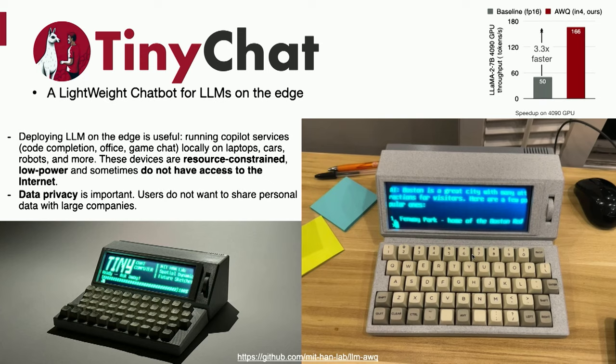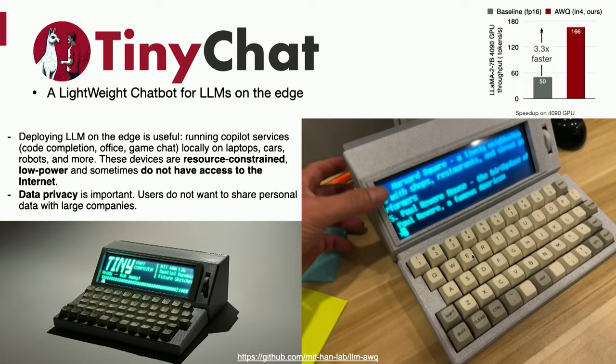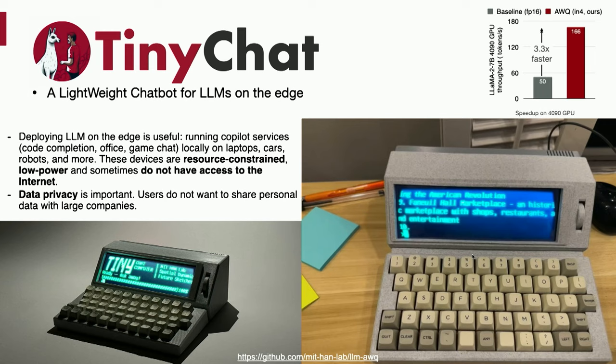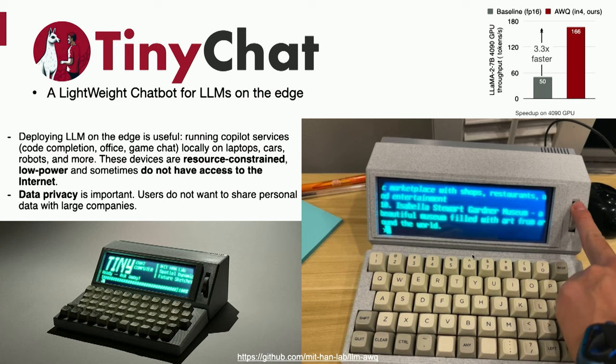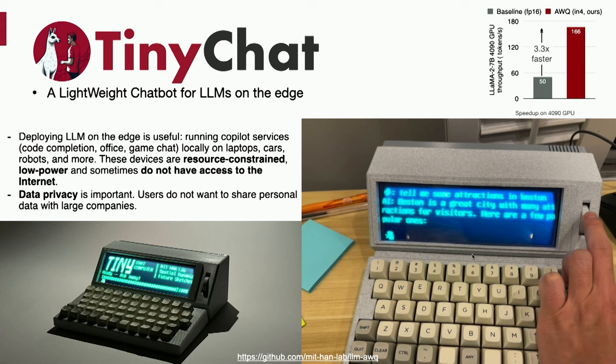We 3D printed a tiny chat computer based on Jetson Orin Nano. We can ask it questions like telling us attractions in Boston — it tells us Museum of Fine Arts, Harvard Square, etc. It's powered by a very small device, the Jetson Orin Nano. Such lightweight chatbots on the edge are very helpful: you can run co-pilot services like code completion, office, game chat locally on laptops, in your car, on robots. But these devices are resource constrained and low power — several orders of magnitude more challenging than vision models. Our TinyML projects referred to model sizes less than one megabyte, but this is 7 billion parameters — 14 gigabytes in FP16.